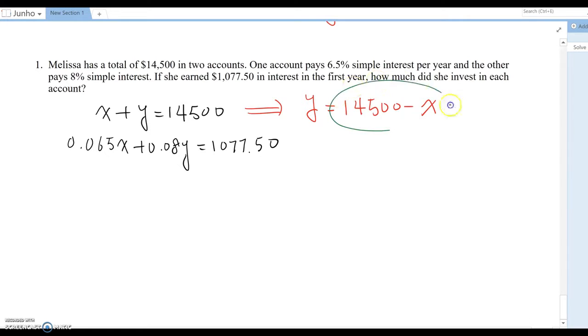Yeah, we plug this into here. Then this equation becomes 0.065X plus 0.08 times 14,500 minus X equal to 1077.50.